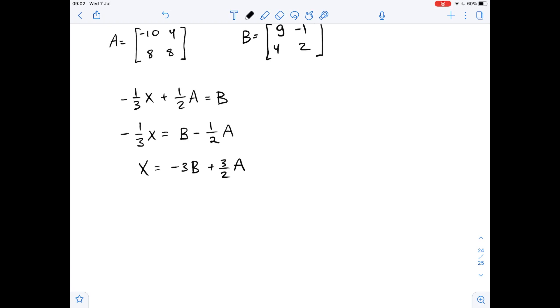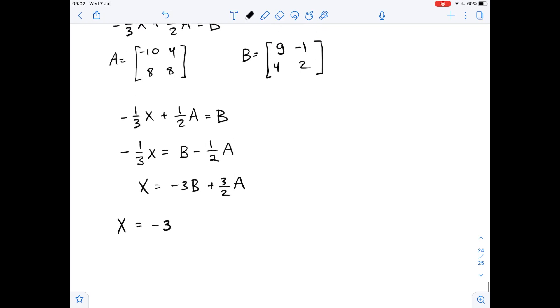Now in order to find matrix X we substitute matrices for B and A. So we get negative 3 times matrix B plus 3 over 2 times matrix A.